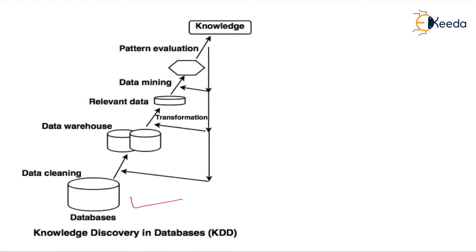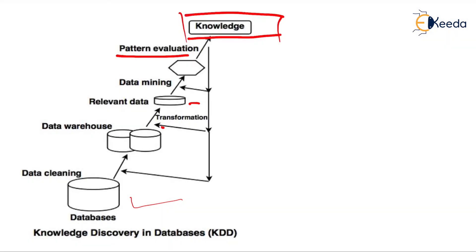Consider we have one database. We clean that data, then perform data warehousing by dividing it into different databases. The relevant data is sent to data mining. In that space we also perform transformation — like converting categorical data to numerical, numerical to different data types, and working with label encodings. After all that, we send our data to perform data mining, then to data evaluation or pattern evaluation. Different algorithms are performed on that, and after that the final knowledge is extracted. That is KDD.